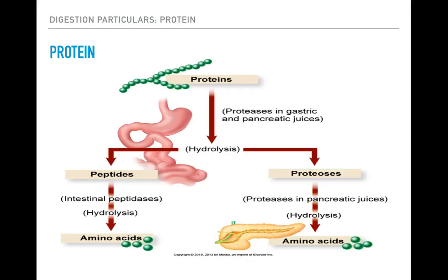Protein digestion begins with long chains of proteins. As proteins are being digested and through the process of hydrolysis, they can be broken down by one or two different classes. With peptides through intestinal peptidases, or enzymes, and through the process of hydrolysis, these peptides are broken down into amino acids.